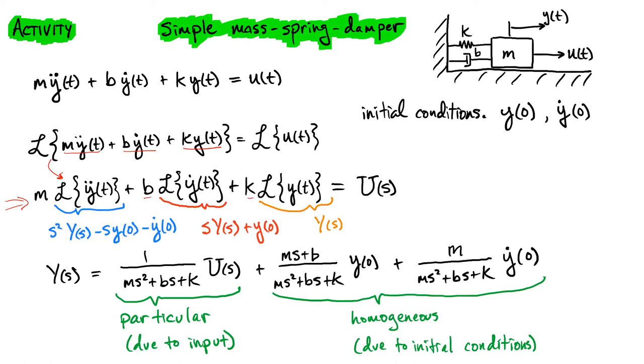And linearity of the Laplace transform allows us to get to this equation here where we pulled the scalar coefficients - the mass, the damping coefficient, and the spring constant out. And now we're just taking the Laplace transform of each of these different functions y double dot, y dot, and y. So capital Y of S is exactly the definition as being the Laplace transform of little y of t.